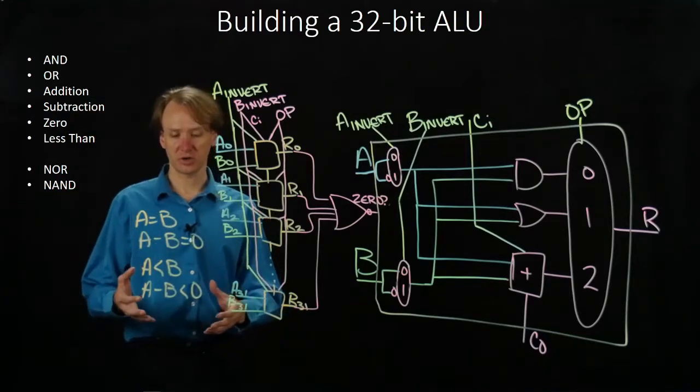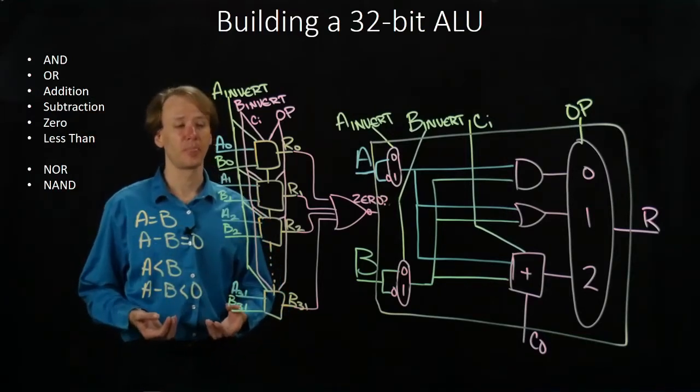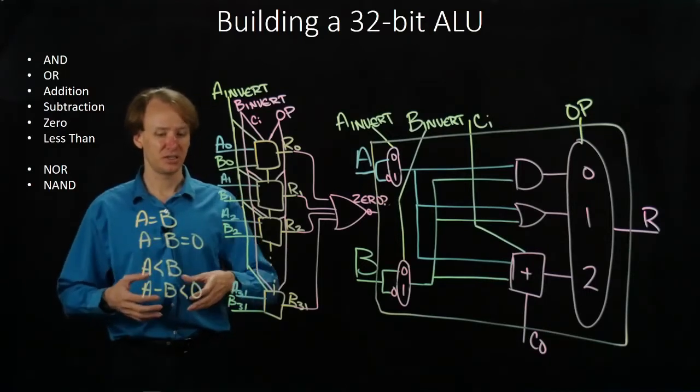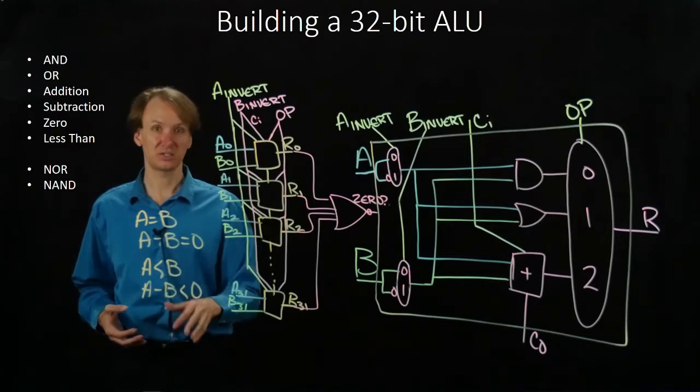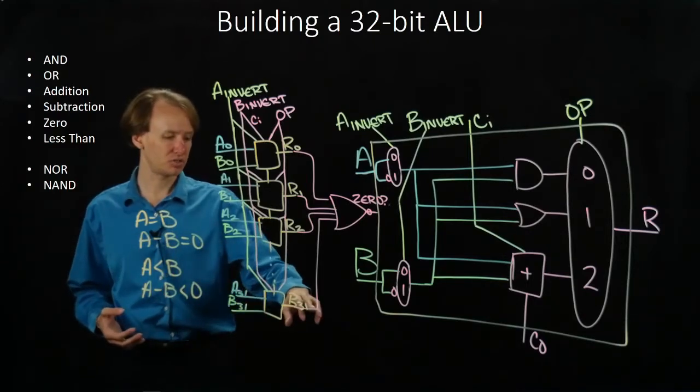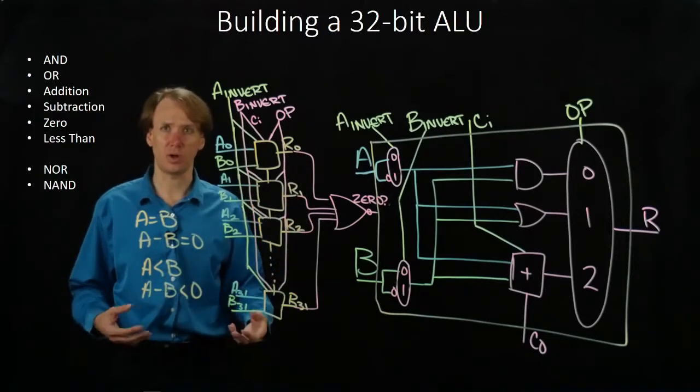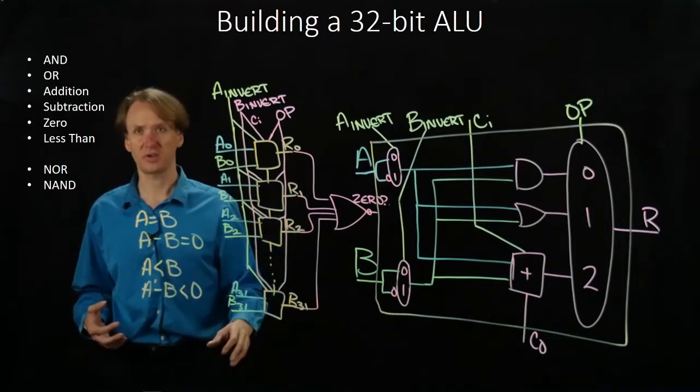We can do something similar for less than. Remember we're going to be using two's complement numbers. That means that if the results are negative, less than zero, then the most significant bit will be one. Some of the others may be as well, but the most significant bit will be one.